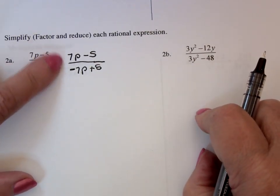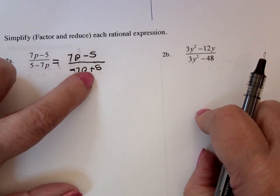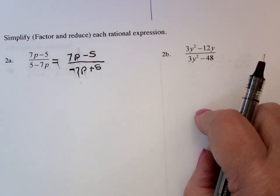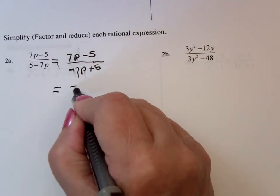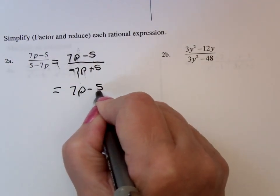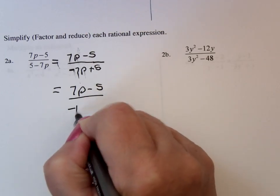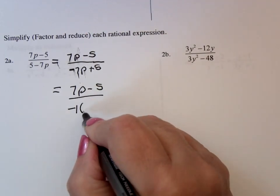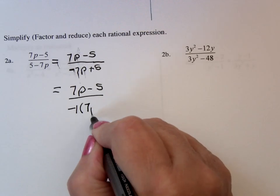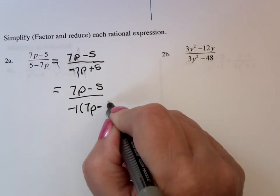Notice they are not the same because 5 here is positive, 5 there is negative. However, in the denominator, I can factor out a common factor of negative 1, which would give me a positive p and a minus 5.